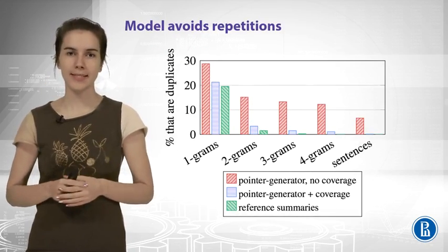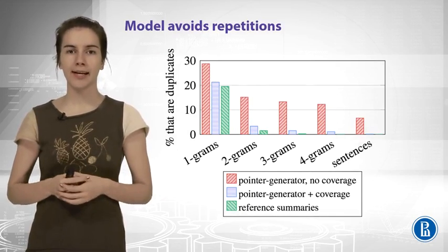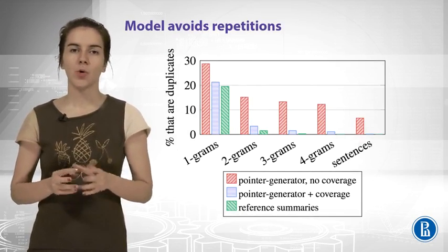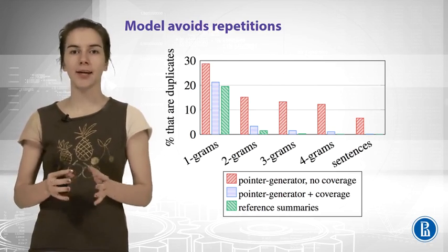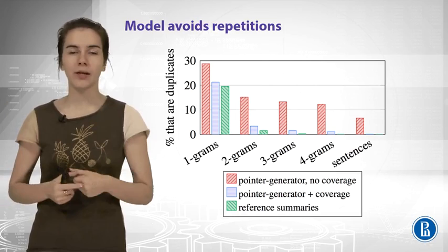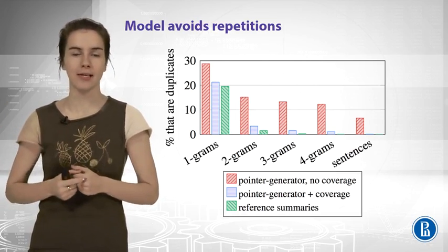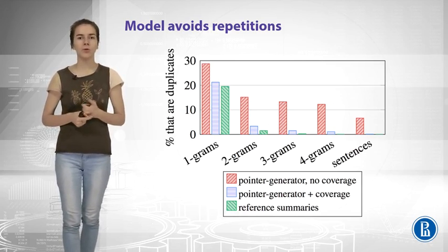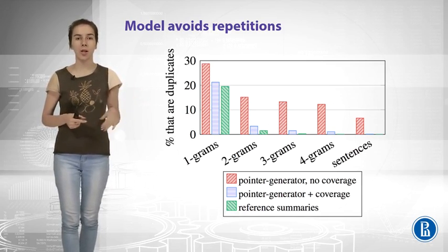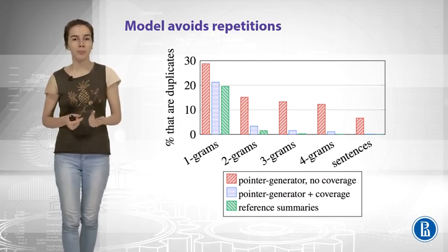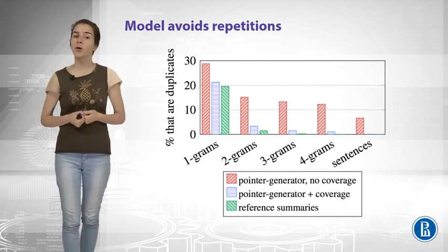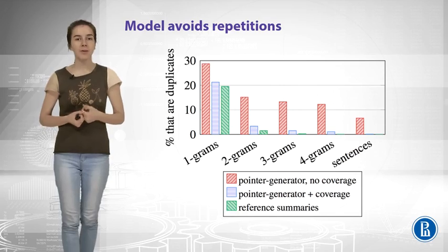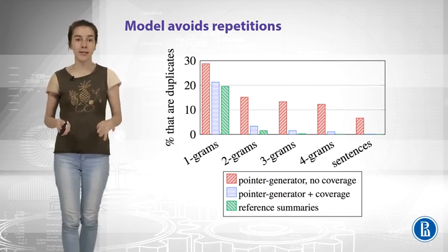Let us see whether the model works and whether the coverage trick helps us avoid repetitions. We can compute the ratio of duplicates in our produced outputs, and also compute the same ratio for human reference summaries. It is okay to duplicate unigrams, but it is not okay to duplicate sentences — the reference level for sentences is really low, essentially zero. The model before coverage (the red one) didn't know that and duplicated a lot of trigrams, four-grams, and sentences. The blue one, with coverage, does not duplicate that — and this is really nice.